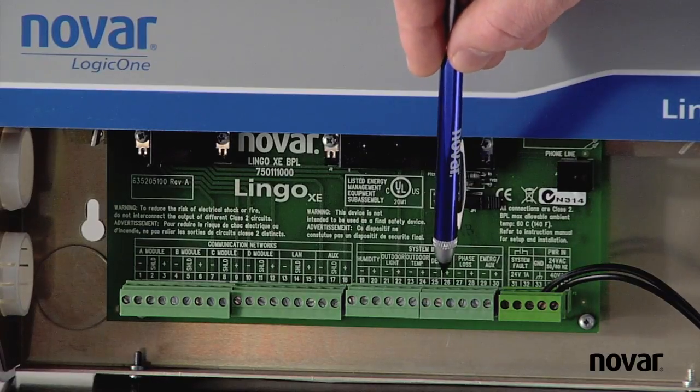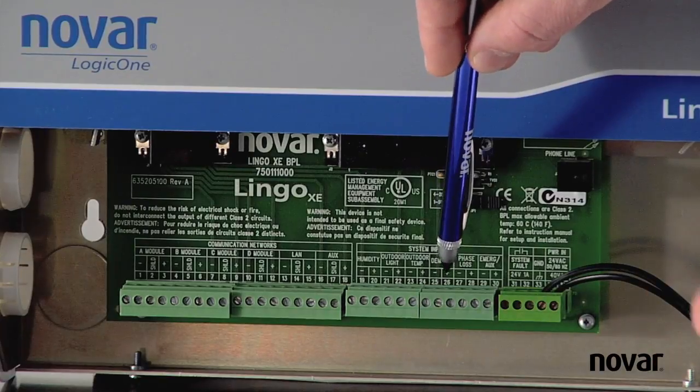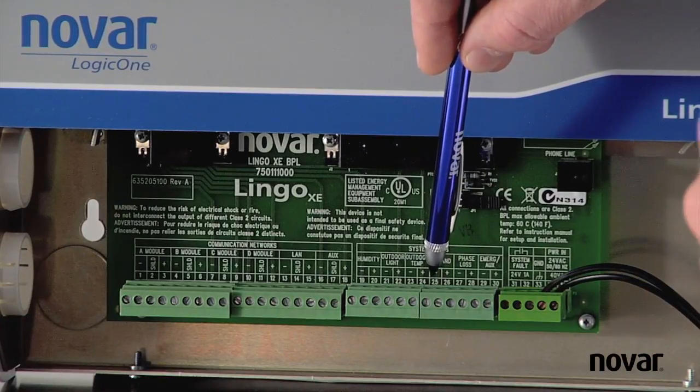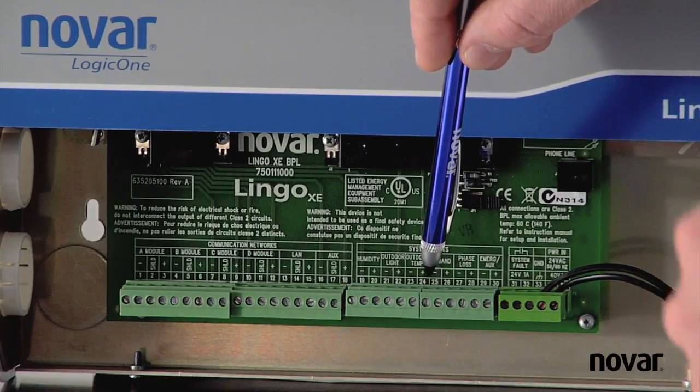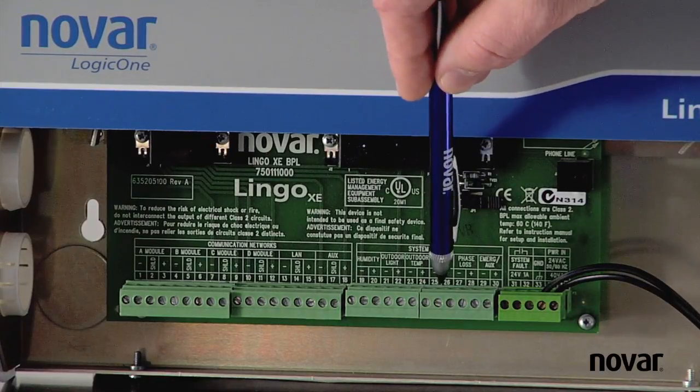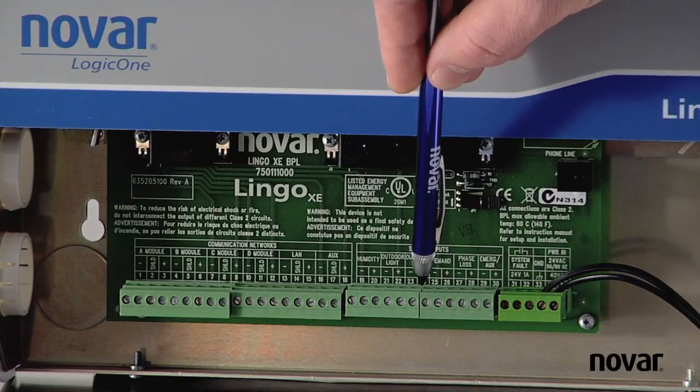To the side of that I've got three digital inputs. Now part of this Lingo XE's responsibility is to take 24 VAC and convert that to 5 volt DC. So each of these positive terminals is a 5 volt DC power source.